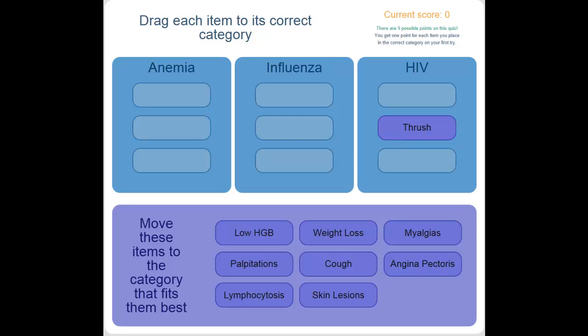The same commands can also be carried out with the keyboard. By default, each item is lettered and columns are numbered. So to move item C to column 2, I'd type C followed by 2.